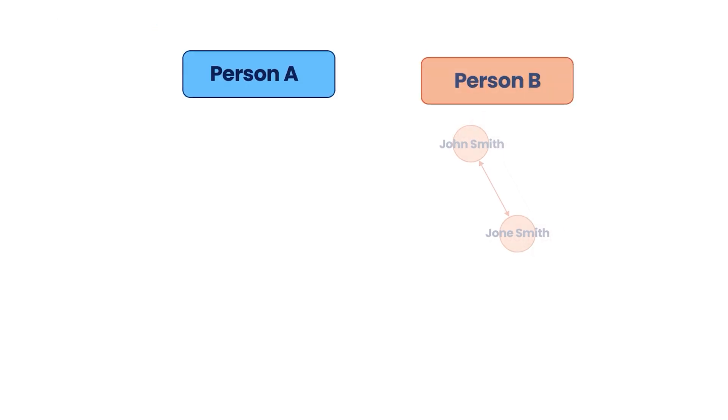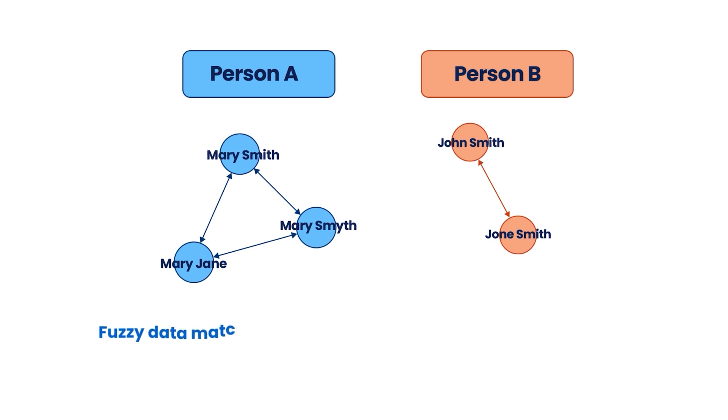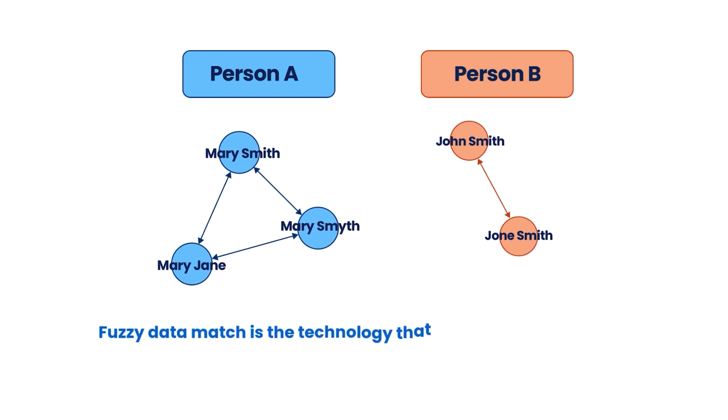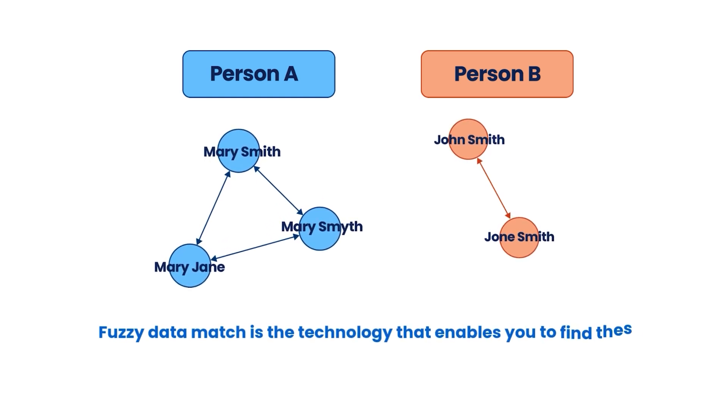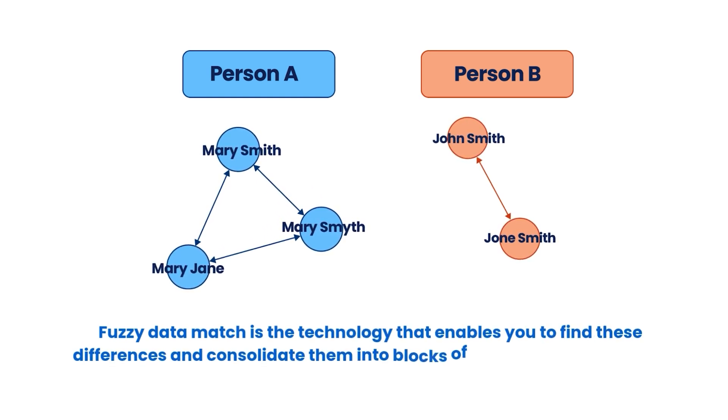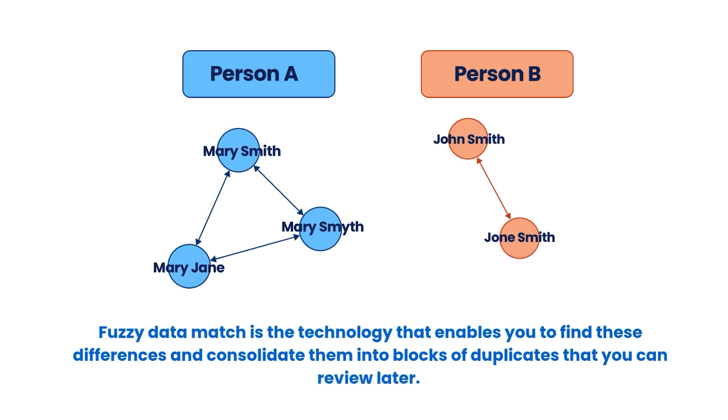It is practically impossible to resolve these duplicates or variations using simple exact match methods. Fuzzy match is the technology that enables you to identify these differences in names, phone numbers, and email addresses, and helps you consolidate them into blocks of duplicates that you can review later.